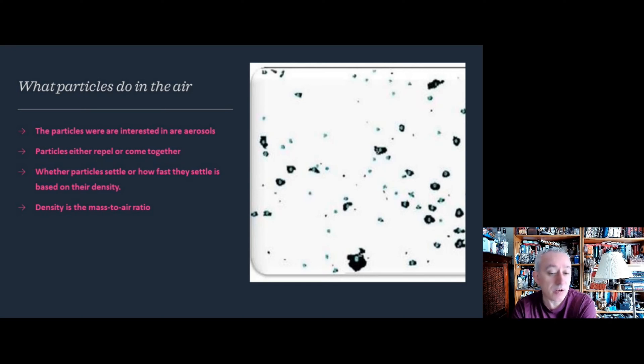Particles either repel each other or come together. A good analogy is the coat hanger syndrome - when you take one coat hanger from your wardrobe, you often end up taking two or three because they lock together. That's how particles can come together and form agglomerates.